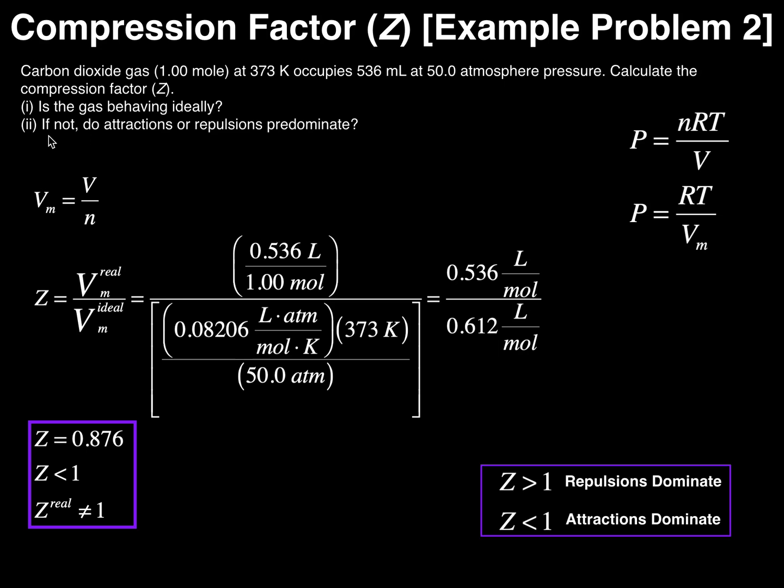Now we can answer the second question: do attractions or repulsions predominate in the gas? This is a valid question when we have a real gas. We can answer this by looking at our compression factor and seeing that it's less than 1. When Z is less than 1, that means we have a gas in which attractions are predominating.